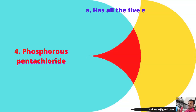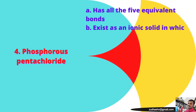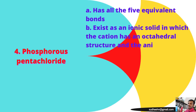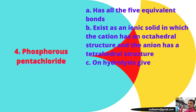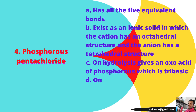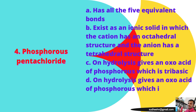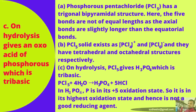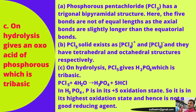Question four: phosphorus pentachloride — option C is the right answer: on hydrolysis it gives an oxo acid of phosphorus which is tribasic. Option A (all five equivalent bonds) is wrong because PCl5 has a trigonal bipyramidal structure where axial bonds are longer than equatorial bonds. Option D (gives a good reducing agent) is also wrong.